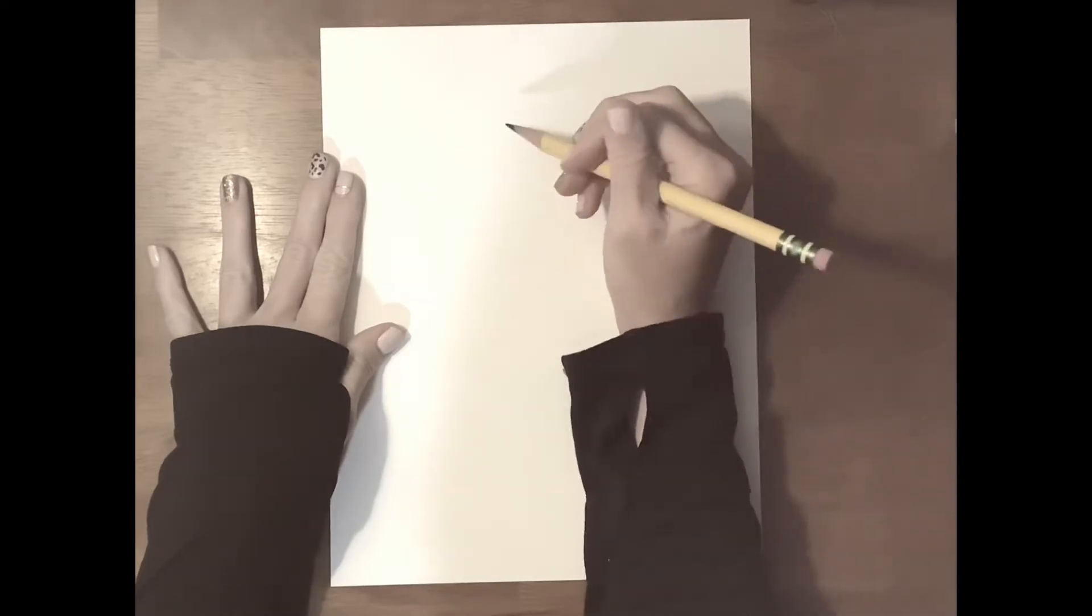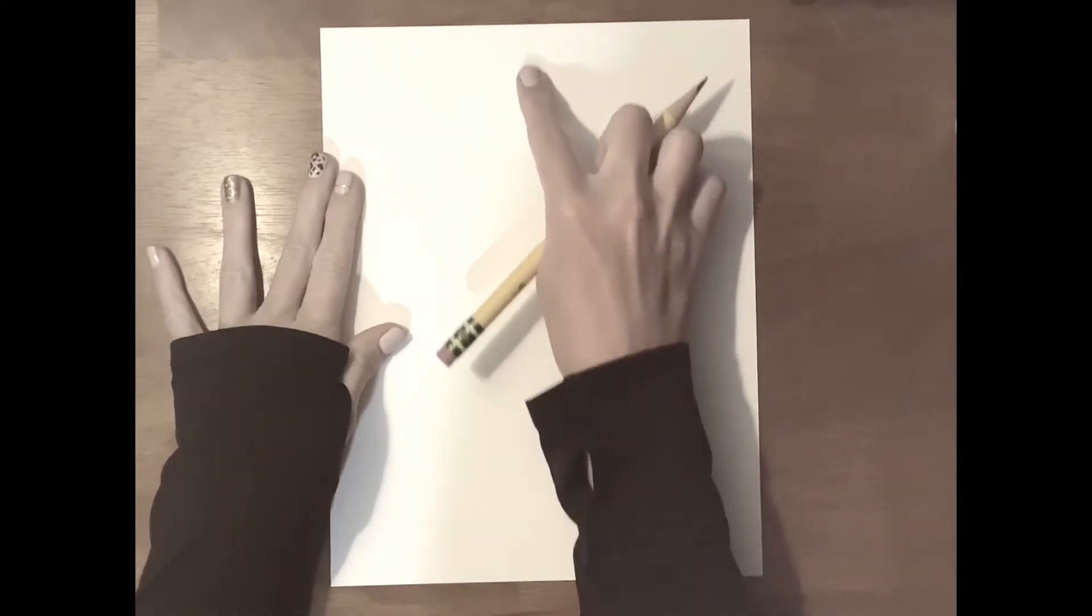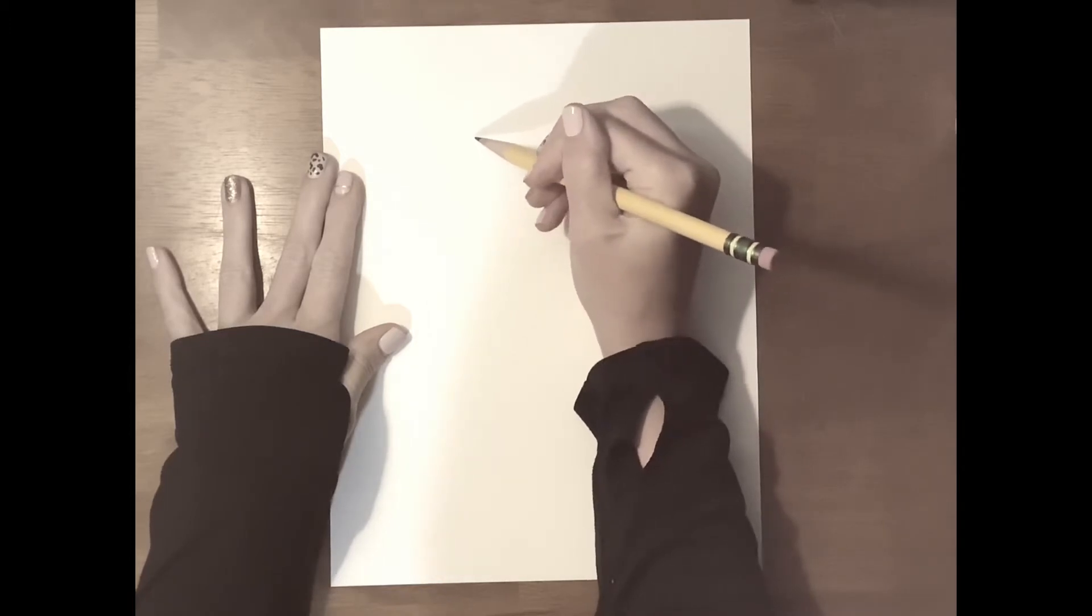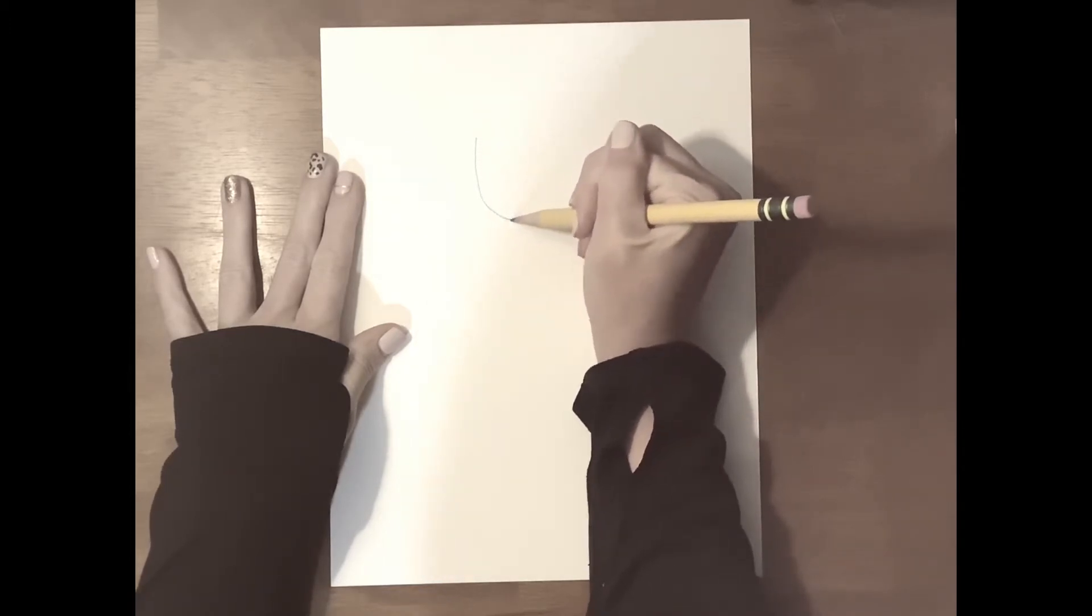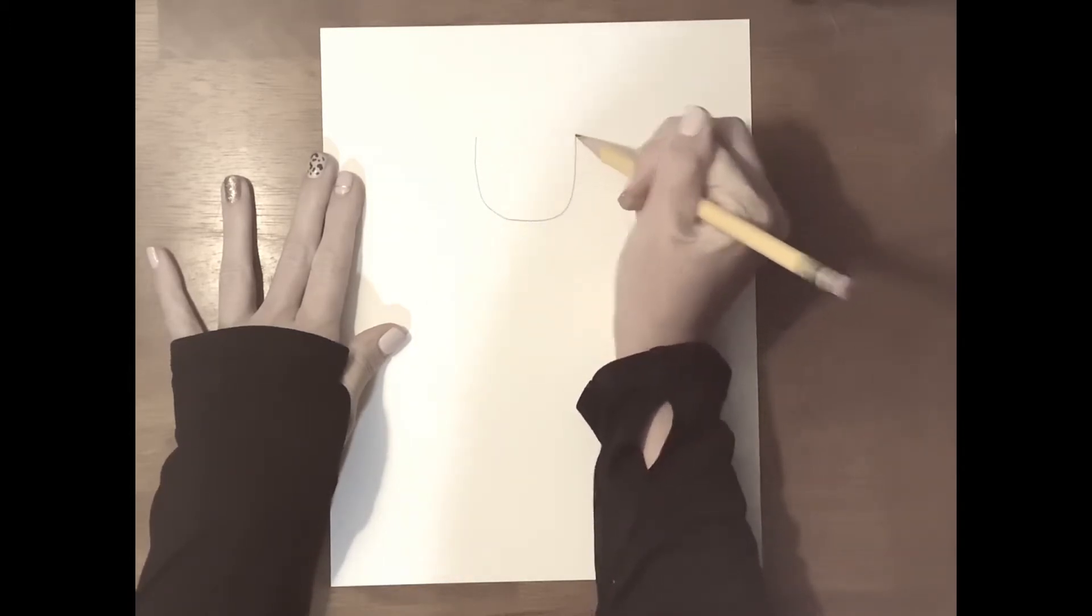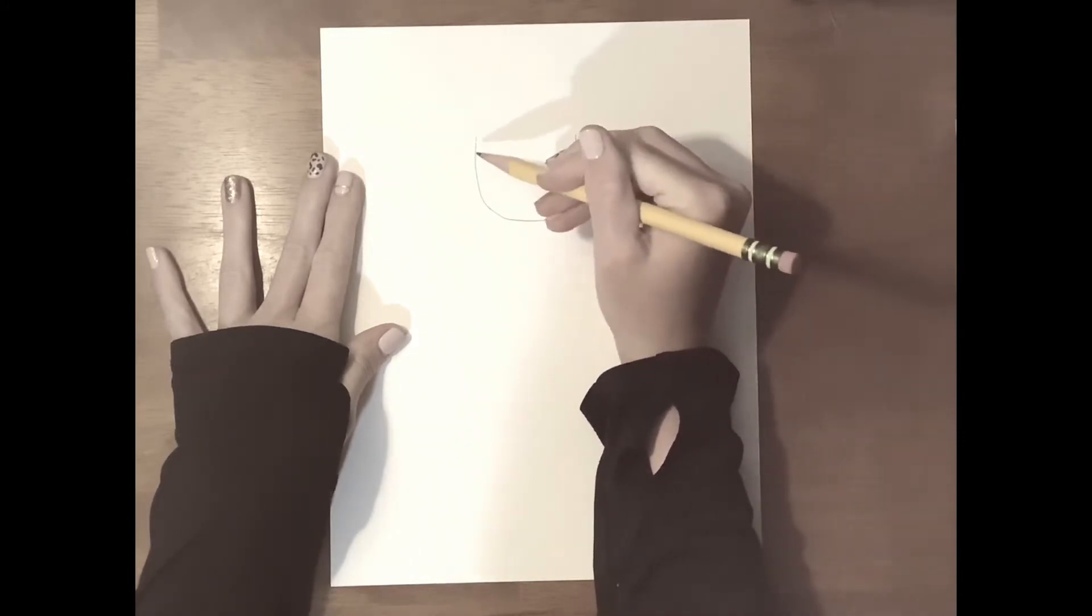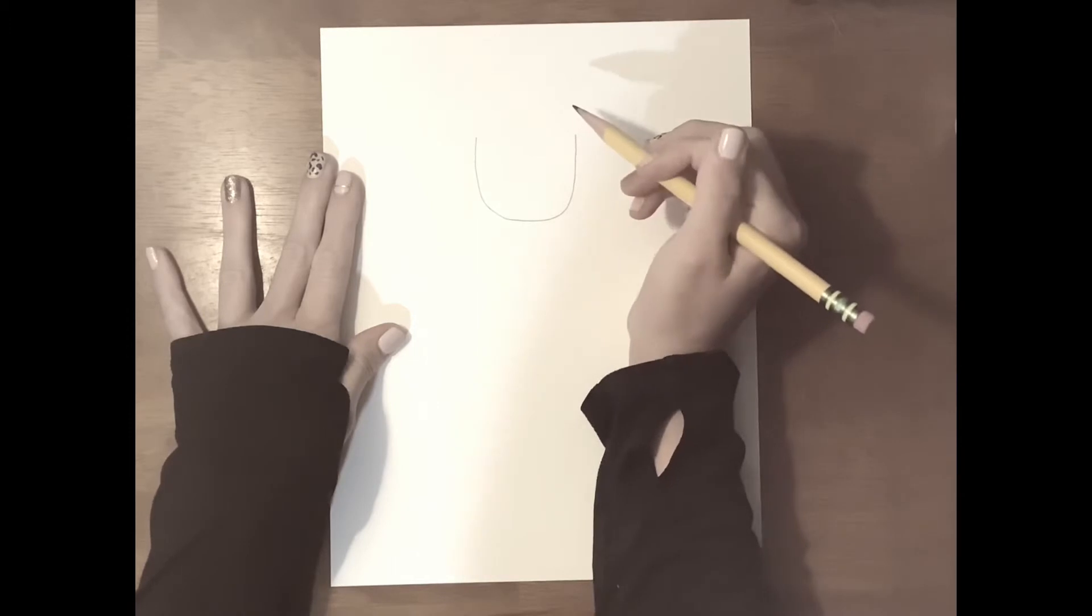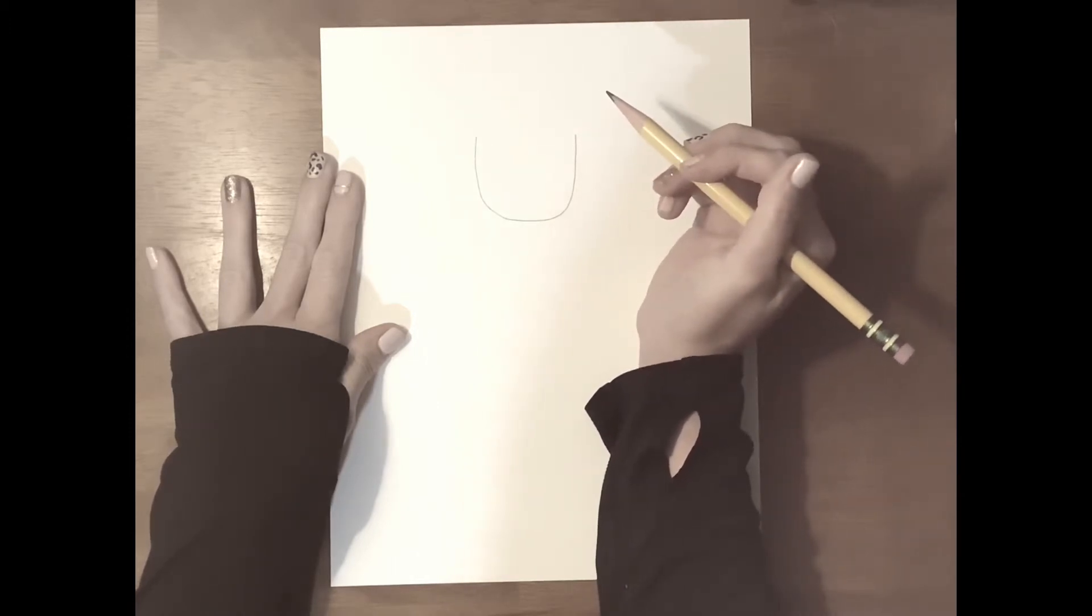The first thing you are going to do is at the top of the paper, you're going to come a little ways down and you are going to draw a U shape. This is Maria's face. Do not put a top on it yet. Do that now.